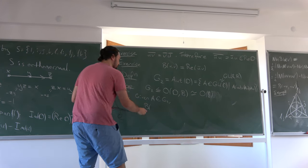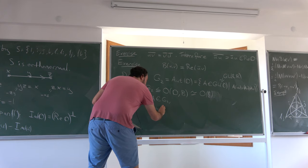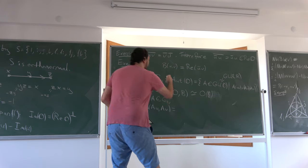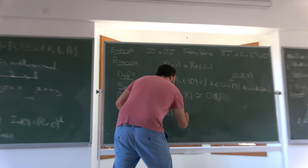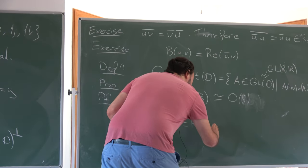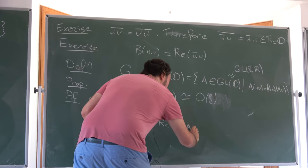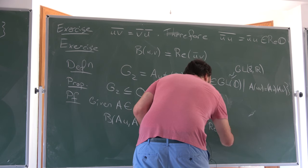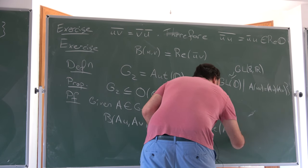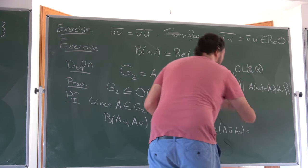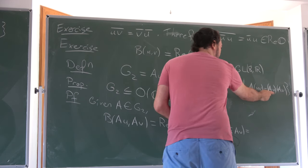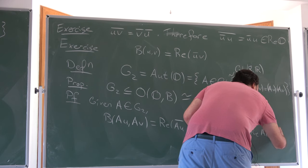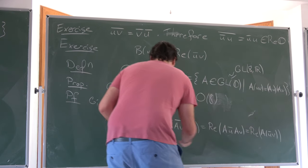G2 also has a big brother called Spin(7), and there's an analogous theory for Spin(7) as well. Now, moving toward a different description of G2 more suitable for differential geometry, we define cross product operations. Similar statements hold for complex G2, but you have to be more careful — orthonormality is with respect to the symmetric bilinear form rather than an inner product.